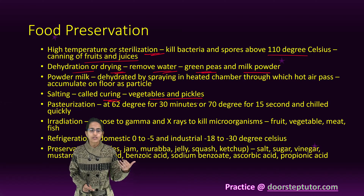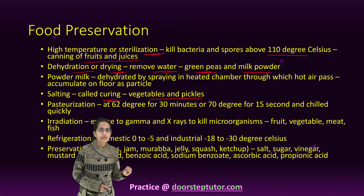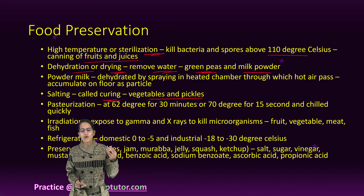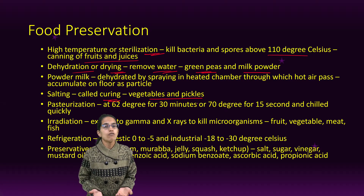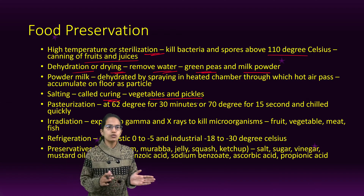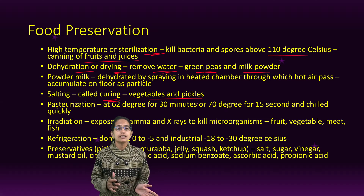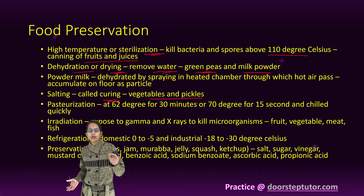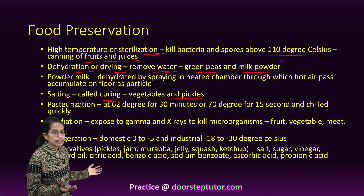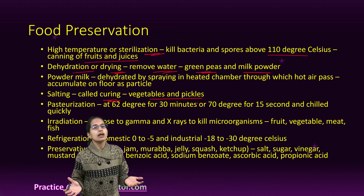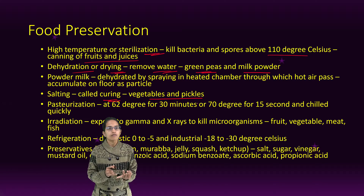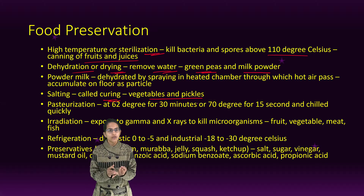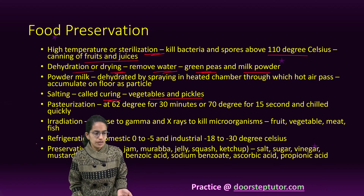Irradiation uses X-rays or gamma rays to kill microorganisms and is used for fruits, vegetables, meat, and fish. Refrigeration: for domestic use, 0 to minus 5 degrees Celsius; for industrial purposes, minus 18 to minus 30 degrees. Preservatives used in pickles, jam, jelly, squash, and ketchup include salt, sugar, vinegar, citric acid, mustard oil, benzoic acid, sodium benzoate, ascorbic acid, and propanoic acid.